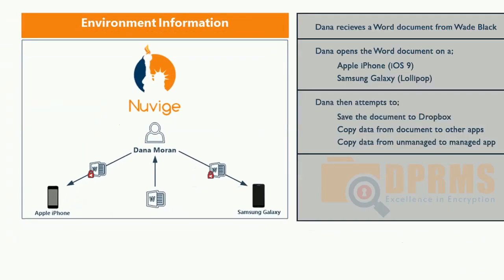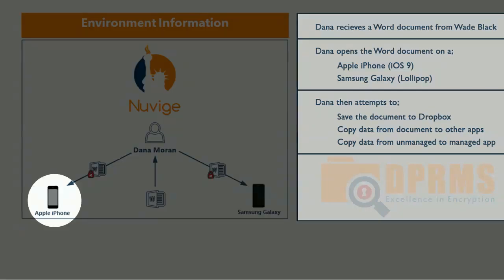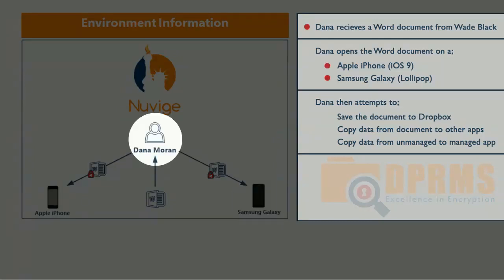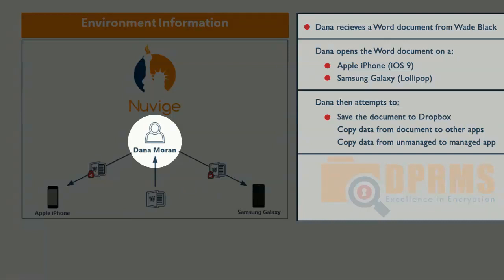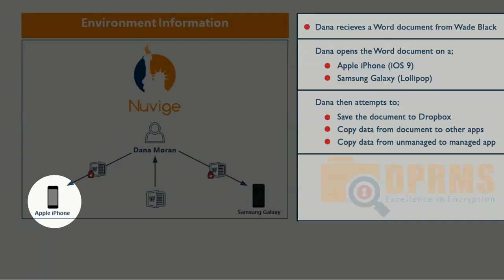To do that, we have prepared a demo environment with one company, Nuvage, and one user, Danamoran. Danamoran has two devices — both have been configured to be managed by Microsoft Intune: one is an iPhone and the other is an Android device. In this demo, Danamoran has received a product launch document which we will consider as corporate data, and Intune has been configured to protect this data from leaving the company premises. She will first try to save this document to her personal Dropbox, which is not managed by Intune, then try to copy text to unmanaged applications, and finally copy from unmanaged to managed applications. She will do this on the iPhone first, then on the Android.